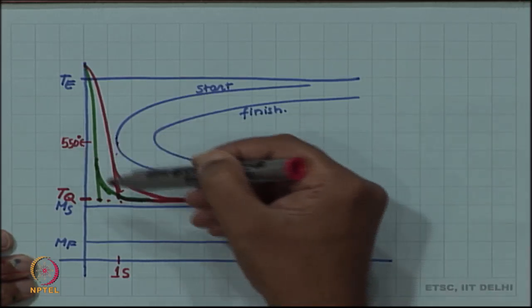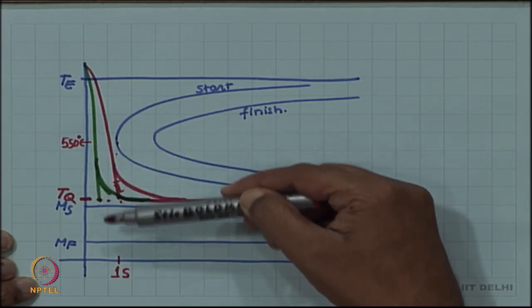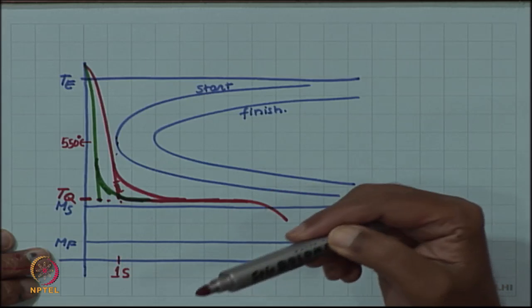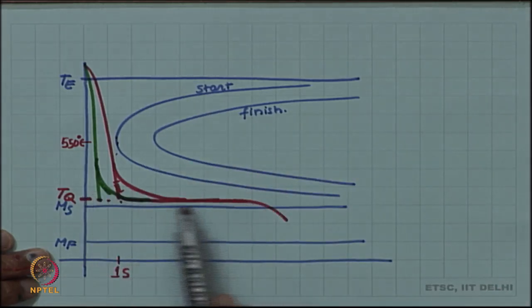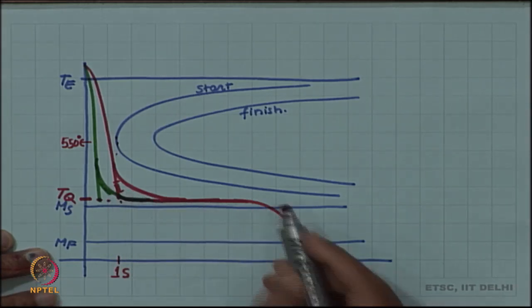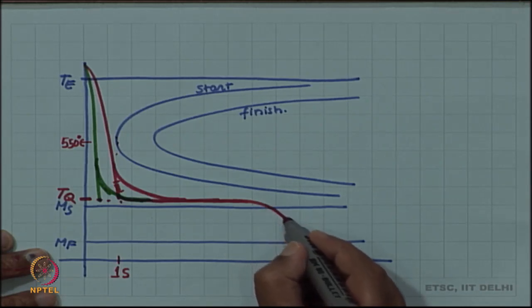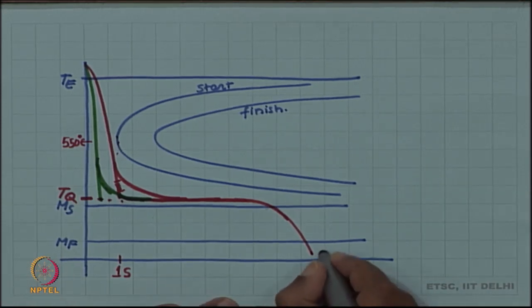But once we have done that, there is no need to keep on maintaining that high cooling rate down to produce martensite. We can use this non-transforming region just above Ms to hold the sample and equalize the temperature. After that, again there is no further need for rapid quenching; a slow cooling will also give us martensite.